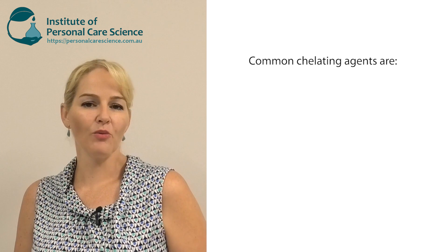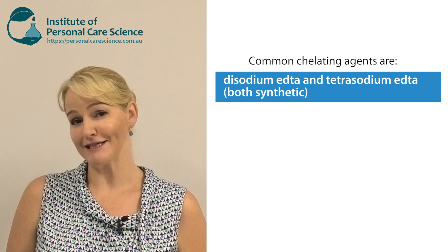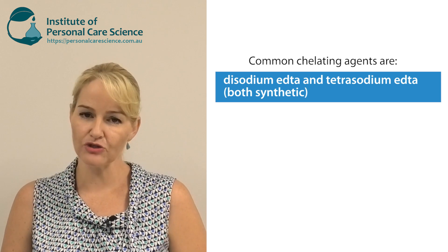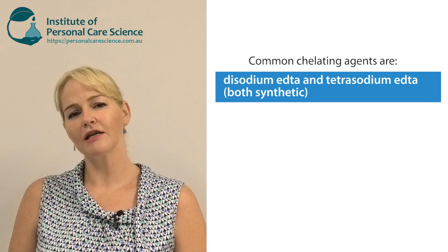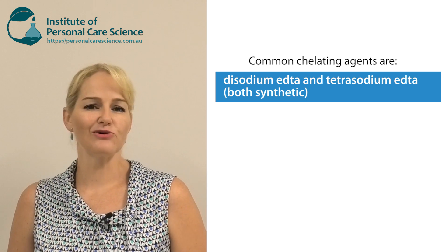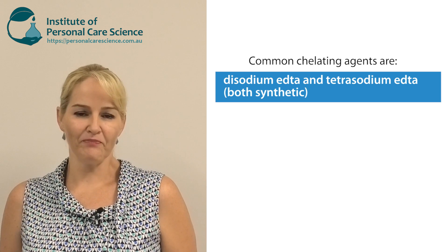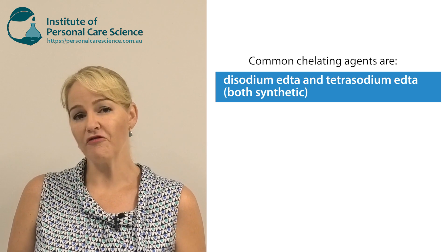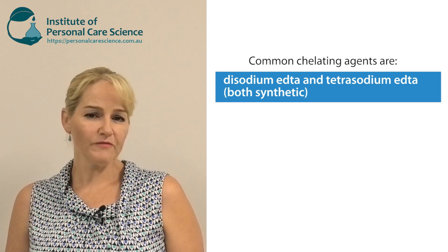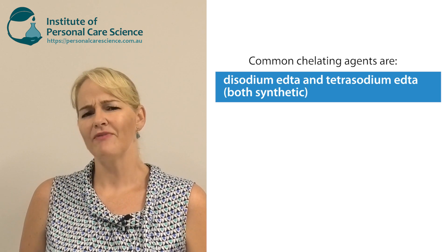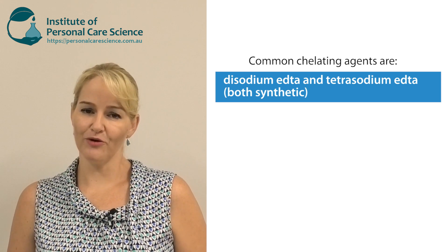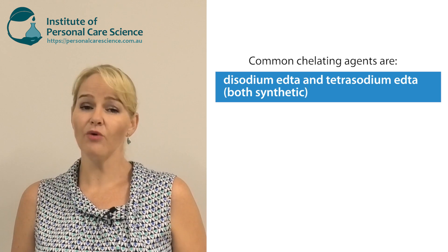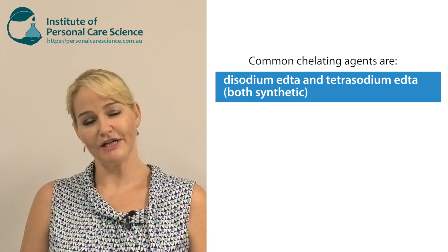So what sorts of chelating agents are there? The most common one is ethylene diamine tetra-acetic acid, or EDTA. The ones we commonly use in personal care are disodium EDTA or tetrasodium EDTA. Tetrasodium EDTA is slightly more water-soluble than disodium EDTA and is better suited to clear formulations, but either works fine. We only use very small amounts — typically between 0.05 to 0.2 percent maximum. There's a lot of misinformation about the dangers of chelating agents, but this relates to ingestion, not topical applications — they're perfectly safe in topically applied formulas.